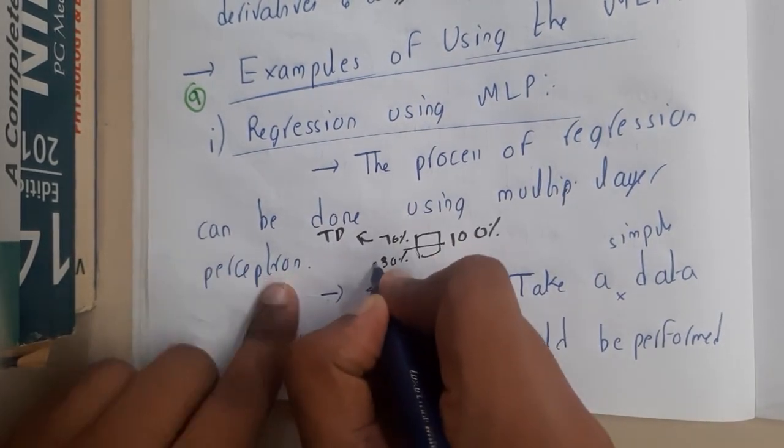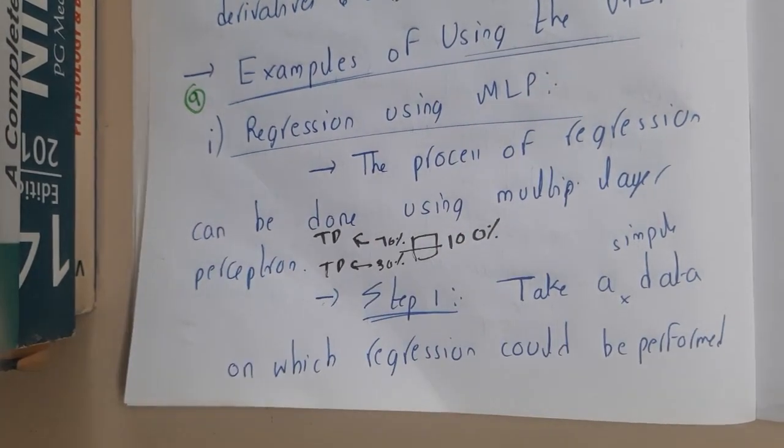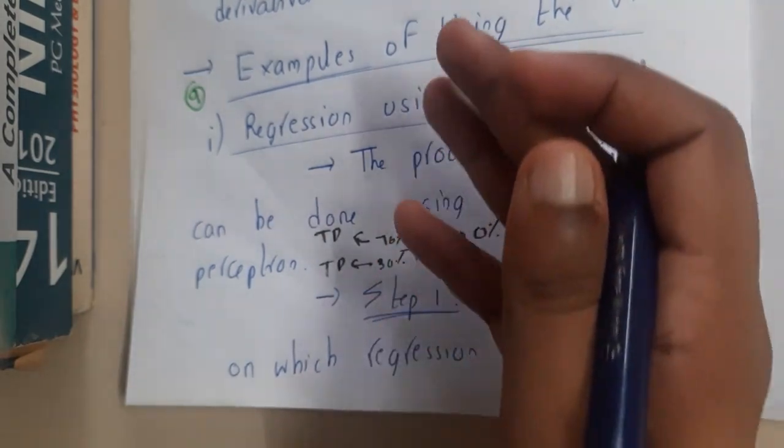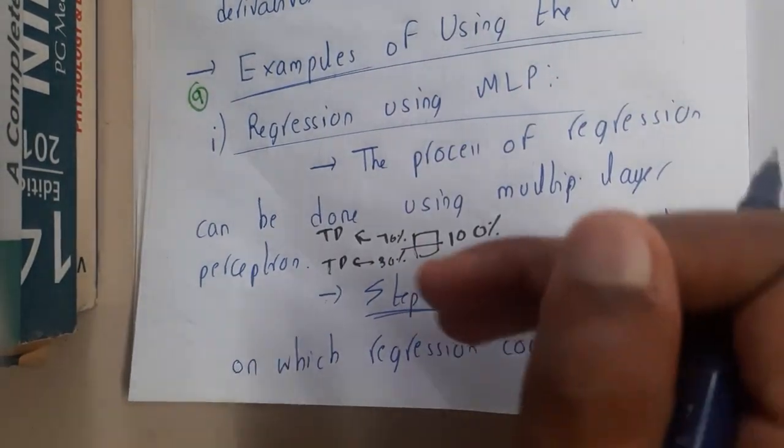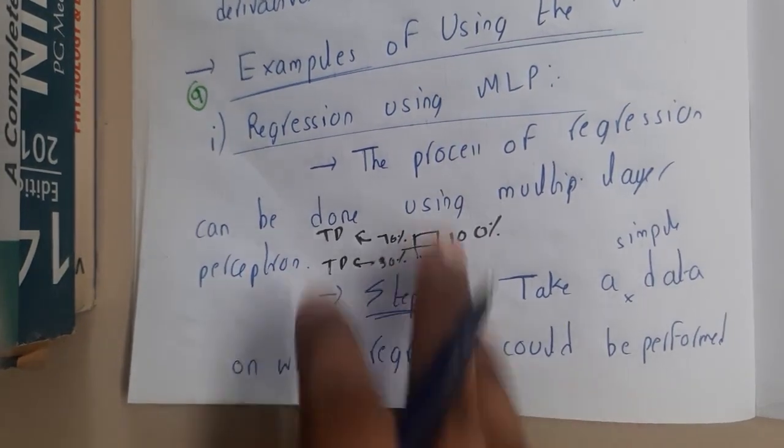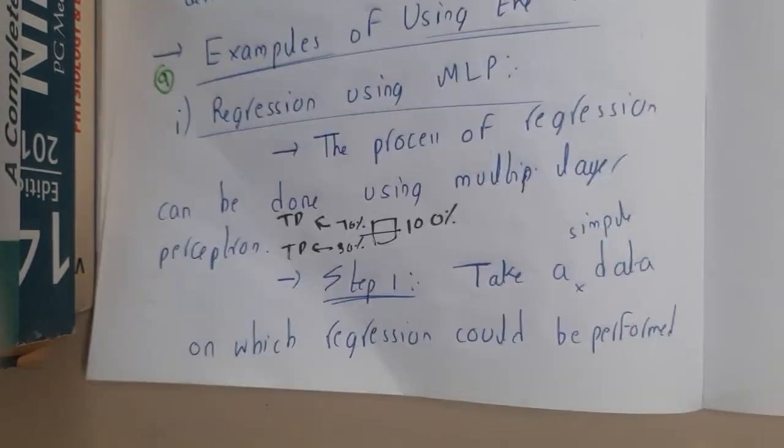Basically in coding you will be separating this. You might be doing it randomly or you will be taking the first one to some number of records as training data and the rest as test data. In that way you will be deciding this.